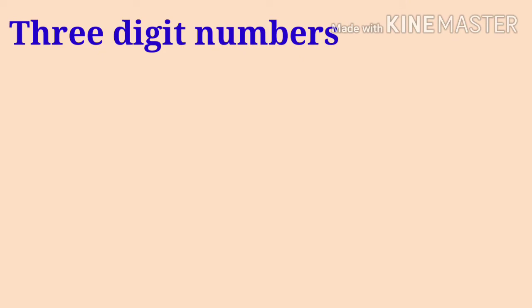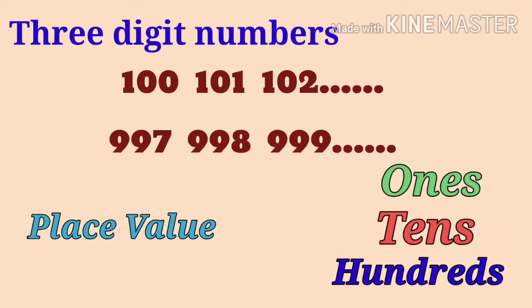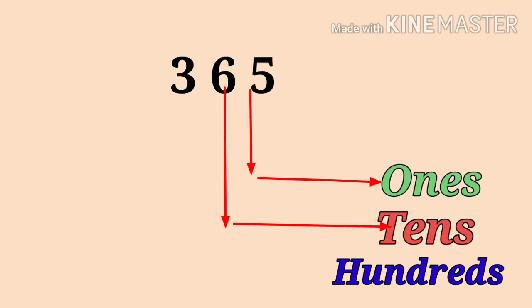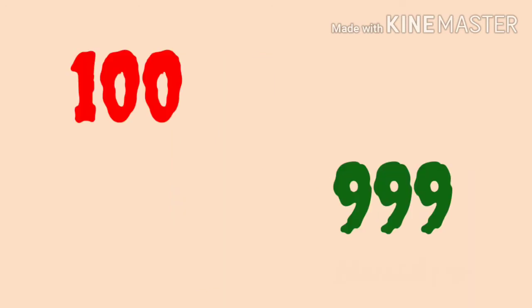The smallest double digit number is 10 and the greatest is 99. Three digit numbers go from 100 to 999 and have three place values: ones, tens, and hundreds. For example, 365 has five ones, six tens, and three hundreds. The smallest three digit number is 100 and the greatest is 999.